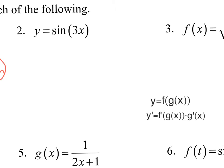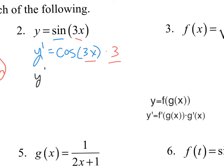Number two: sine is the outside function, and the inside function is 3x. So y prime — I take the derivative of sine of x first, leave the inside alone, and then chain off that inside, which gives a 3. This 3 is the chain. Simplifying, y prime equals 3 cosine of 3x.